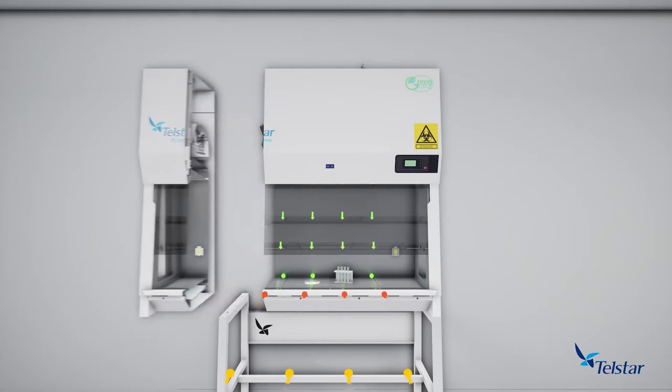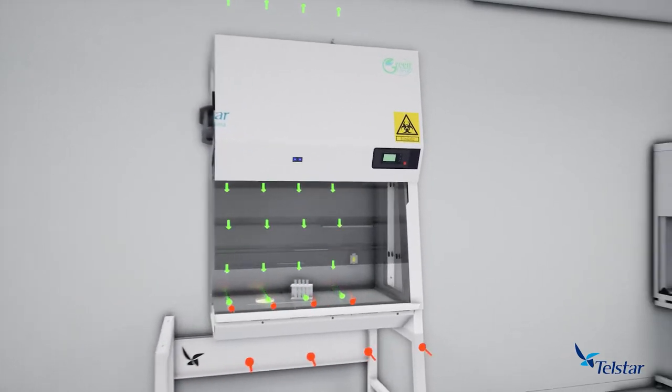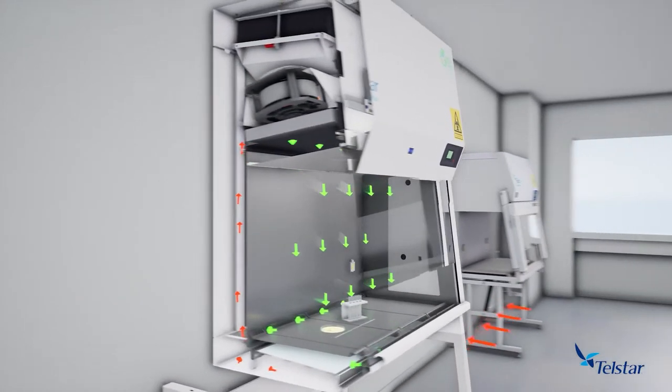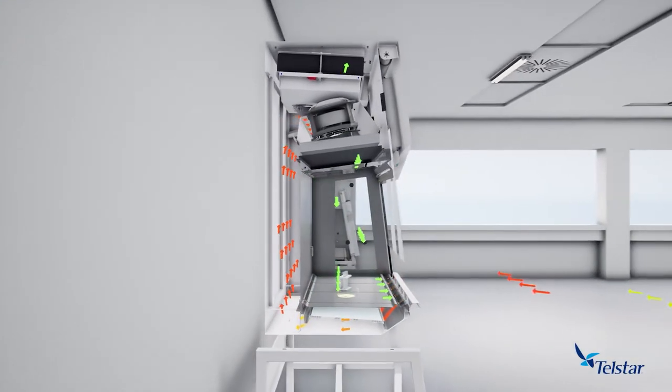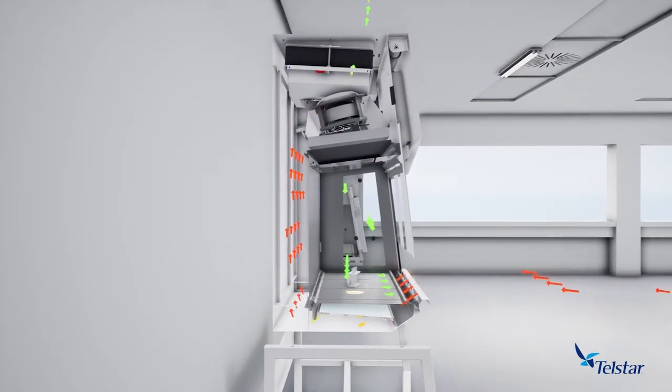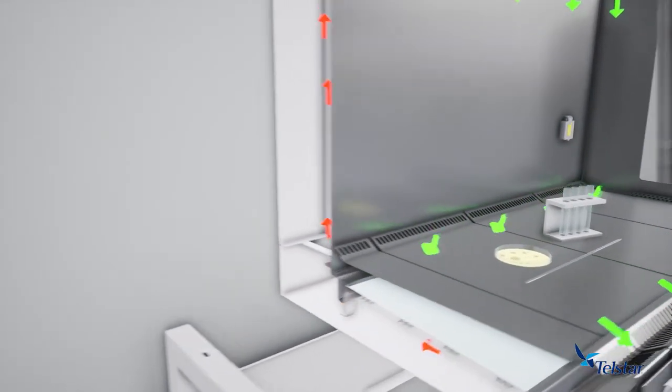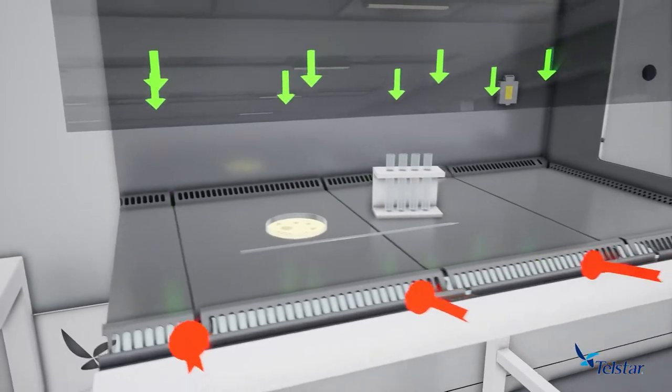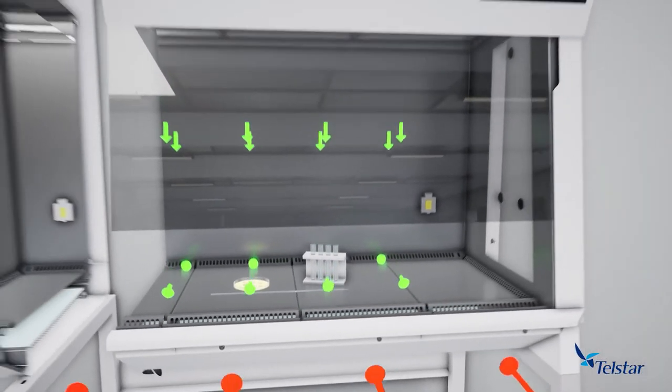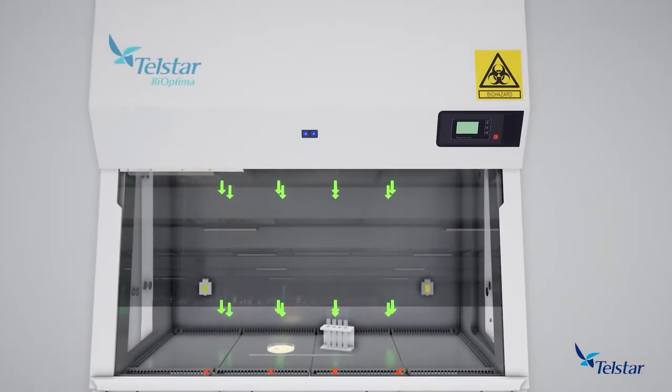Inflow air enters through the front grille, passes through the pre-filter installed underneath the work surface, and travels along the back channel to the plenum. Approximately 30% of the air is HEPA filtered and exhausted by dedicated fans to the environment. Downflow fans HEPA filter the remaining 70% of air to the work area in laminar flow conditions.